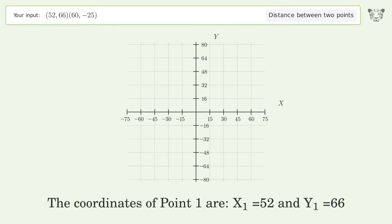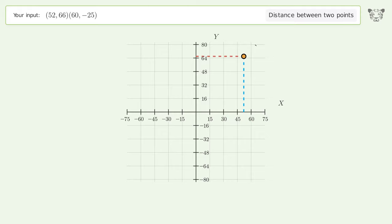The coordinates of point 1 are x₁ equals 52 and y₁ equals 66. The coordinates of point 2 are x₂ equals 60 and y₂ equals negative 25.